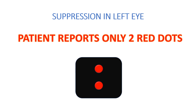Similarly, when there is suppression in the left eye, the patient will respond that they are only able to see two red color dots, because they are not able to see the green light from the left eye. The other response can be alternate suppression, where the patient is able to see two red lights or three green lights, but not all the lights at the same time. This is recorded as alternate suppression.